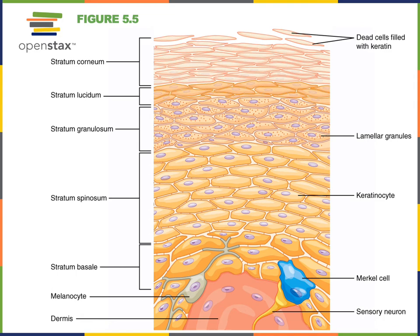Melanocytes are also found in stratum basale, and they produce melanin — the brown pigment — which is important for protecting against UV light. Stem cells also constantly regenerate the layers of the epidermis as cells are continuously being lost from the surface.